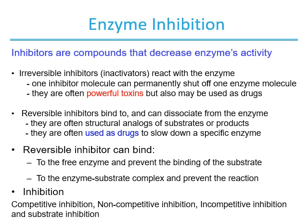Reversible inhibitors can dissociate from the enzyme. They are often structural analogs of substrates or products. Analogs means the structure is similar to the substrates or products, and reversible inhibitors are usually used as drugs to slow down a specific enzyme. The reversible inhibitor can bind to the free enzyme and prevent the binding of further substrates, or the enzyme-substrate complex can prevent the reaction.